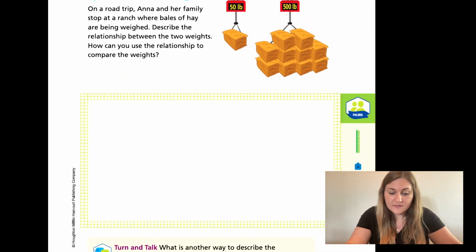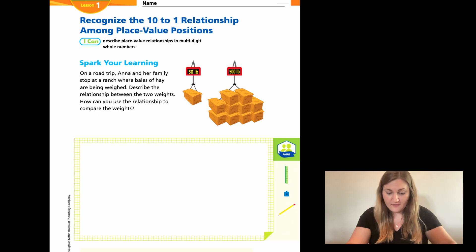Now, in the Spark Your Learning on page 5 of the student page, they have this problem. On a road trip, Anna and her family stop at a ranch where bales of hay are being weighed. Describe the relationship between the two weights. How can you use the relationship to compare the weights? And so we see the first one says 50 and the one next to it says 500. I would like you to use that information of knowing that 50 and 500 are right next to each other. Can you describe the relationship between 50 and 500 in writing? Go ahead and pause right here and see if you can describe the difference.